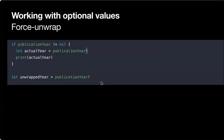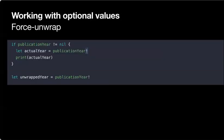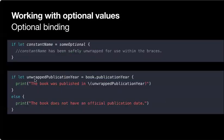Now for the unannounced book, we create a book instance but the publication year is nil. When we evaluate if let unwrappedPublicationYear = book.publicationYear, the value is nil, so the statement gives false and the if block is not executed. The else statement is executed instead, and we print 'The book does not have any official publication date.'